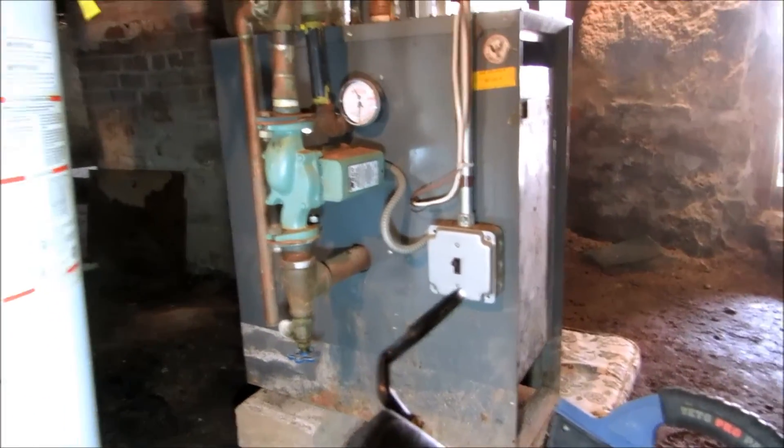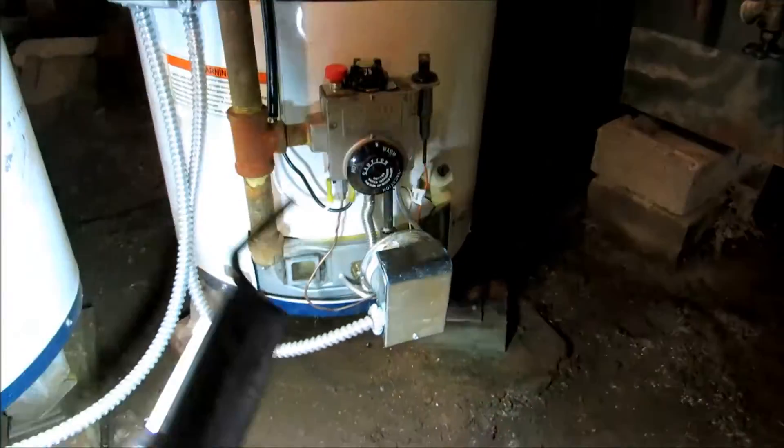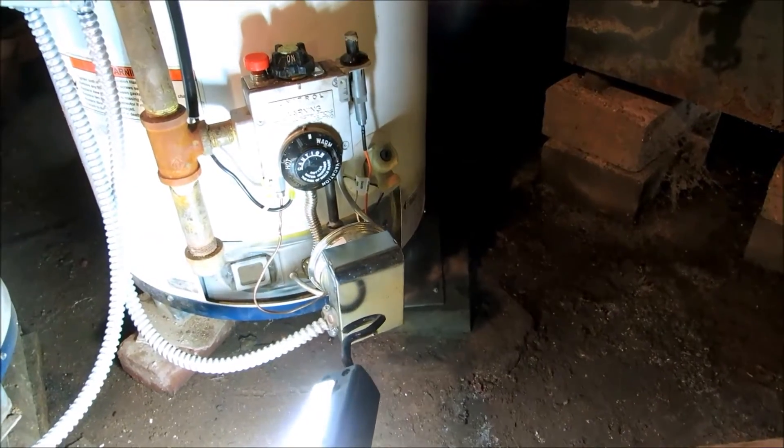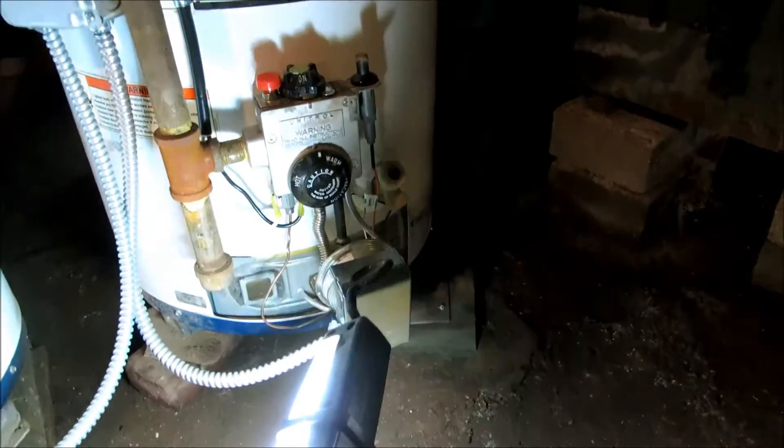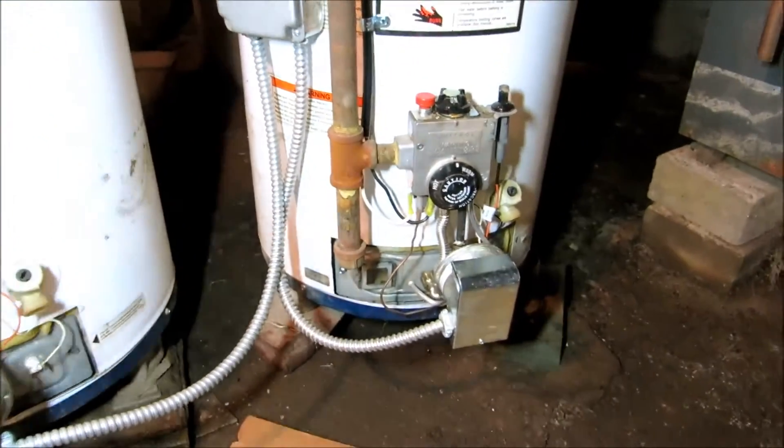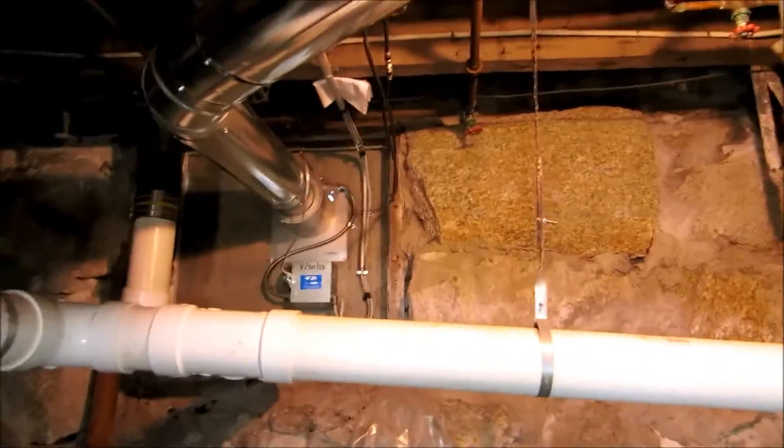Basically how this thing operates is if the boiler calls for heat, it'll turn the power venter on. But if any one of the water heaters calls for hot water, there's constant power to the pressure switch. As the water heater fires, it makes that pressure switch and turns the power venter on. I had to jump this one out to keep that power venter running. So I gotta change these three pressure switches.